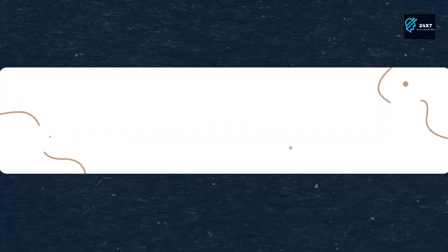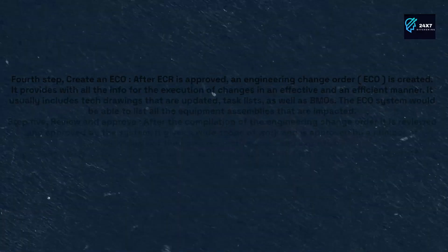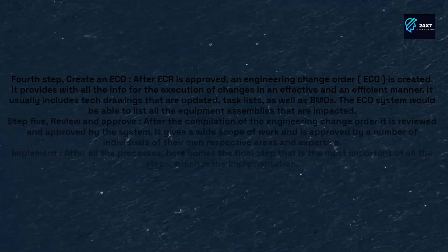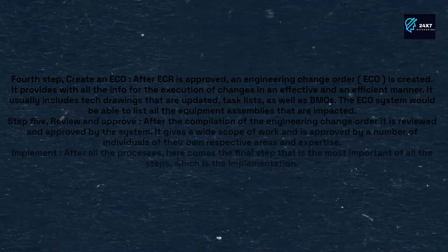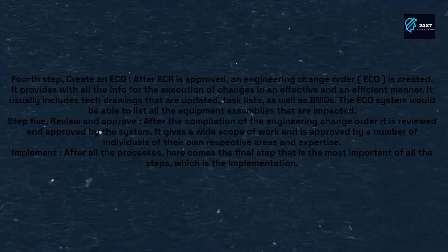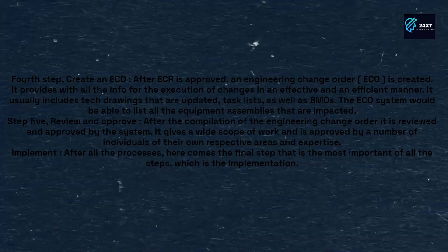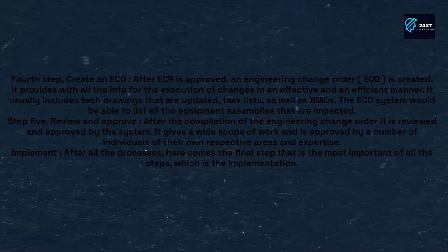The fourth step is to create an ECO. After the ECR is approved, an Engineering Change Order (ECO) is created. It provides all the info for the execution of changes in an effective and efficient manner. It usually includes updated tech drawings, task lists, as well as BOMs. The ECO would be able to list all the equipment assemblies that are impacted.